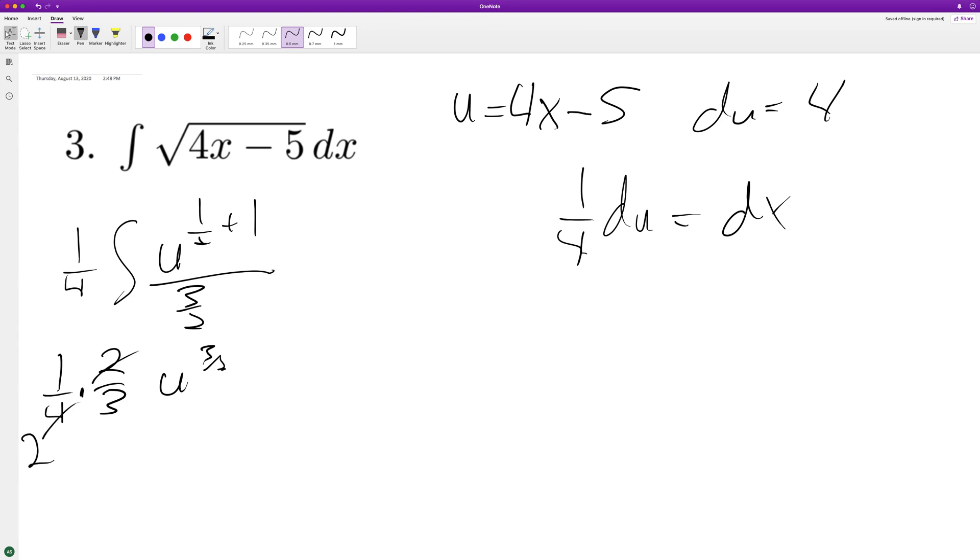This becomes 2, so we have 1/6 u raised to the 3/2, plus c, which becomes equal to 1/6 times (4x minus 5) raised to the 3/2, plus c.